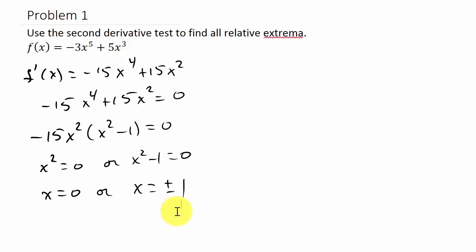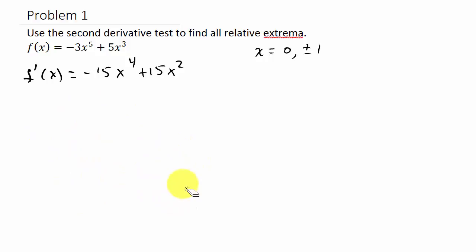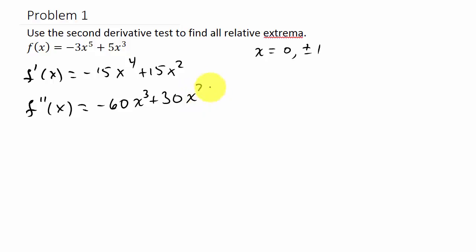So what we have to do now is take each one of these critical numbers and plug them into the second derivative. I'll write my critical numbers up here: zero and plus or minus one. And we need the second derivative, so the second derivative is going to be negative 60x cubed plus 30x.